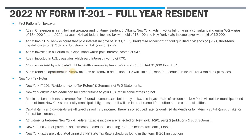Regarding insurance and housing, Adam is covered by a high-deductible health plan at work, making him eligible for a Health Savings Account. He contributed $1,000 to his HSA. He rents an apartment in Albany, so he won't have a lot of itemized deductions — no mortgage interest or property taxes — and will be claiming the standard deduction for both federal and state tax purposes.